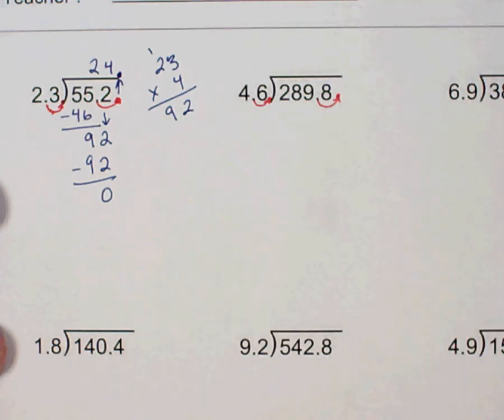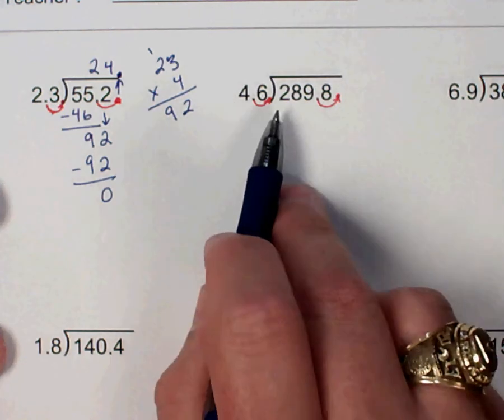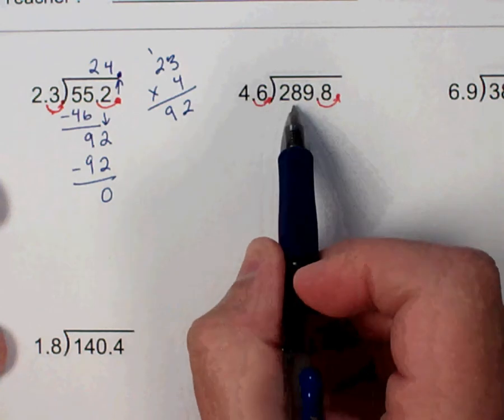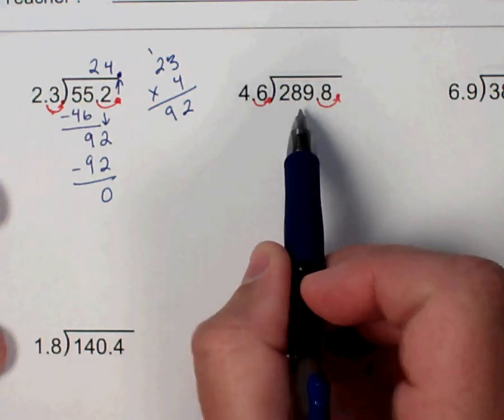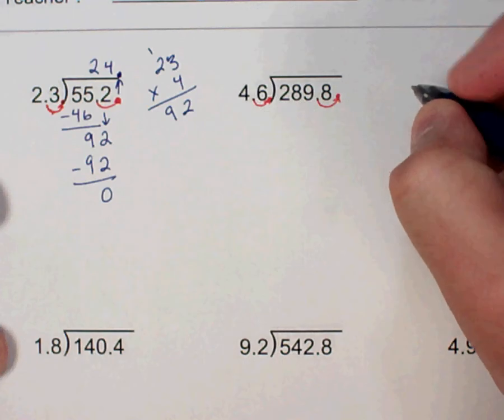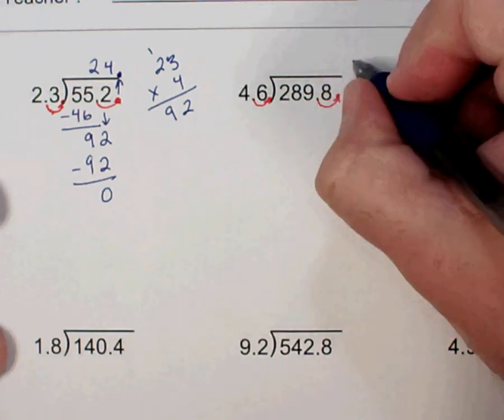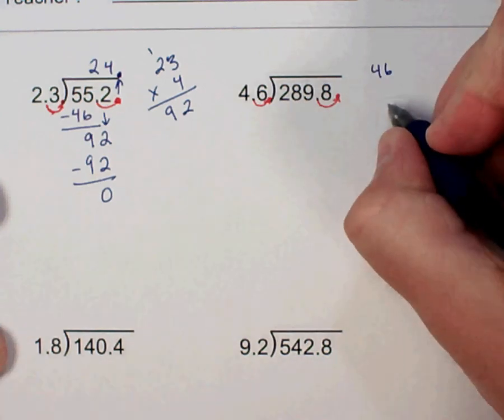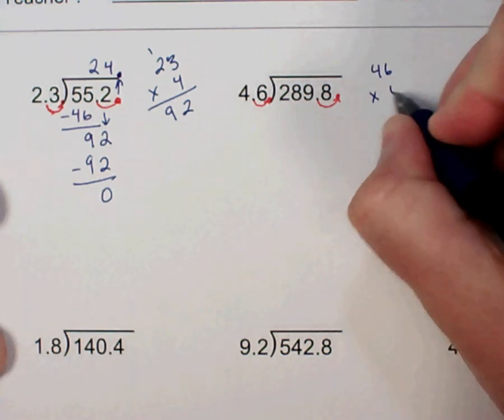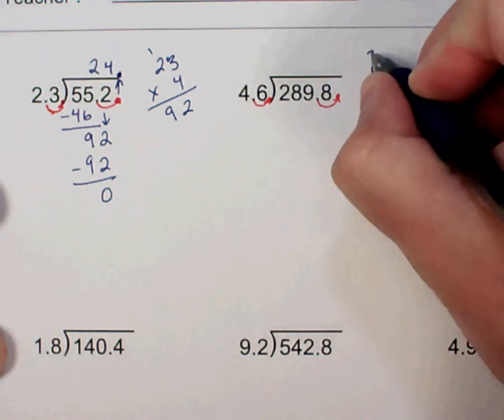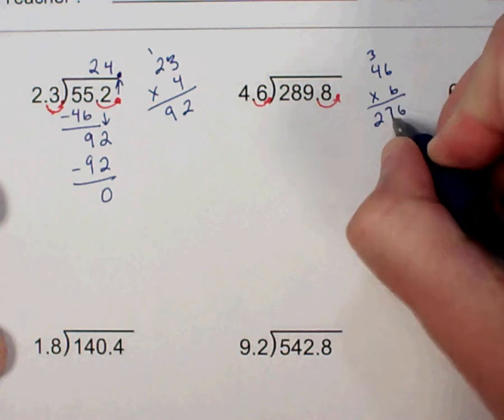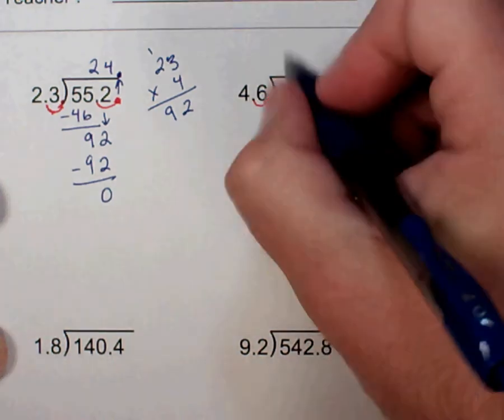And now I'm just going to complete the division. So how many times will 46 go into...well, it won't go into 2, it won't go into 28, so I'm looking at 289. I'm going to try 6 over here off to the side. That may be too much, but let me try. So 6 times 6 is 36. No, that's going to be just fine. So we'll do a 6 right here.